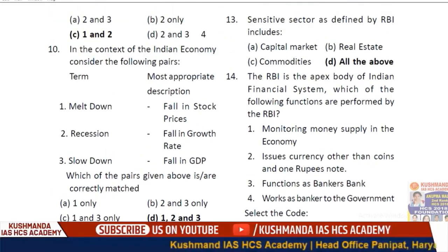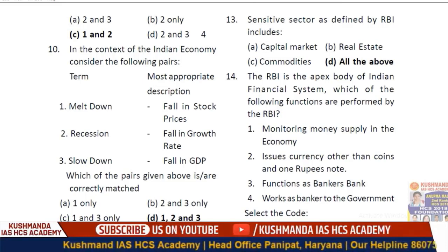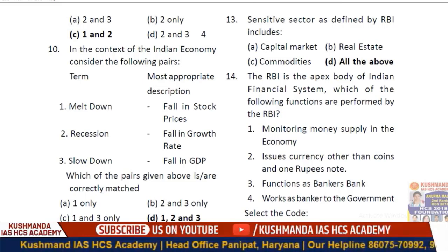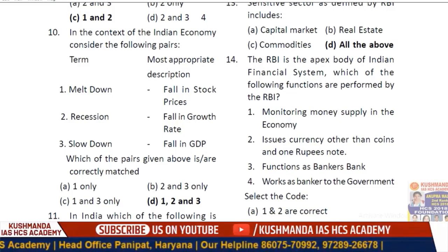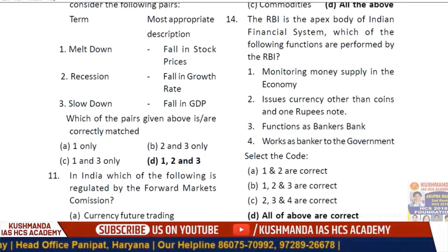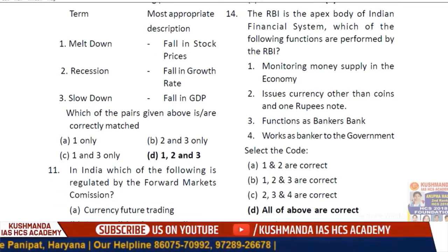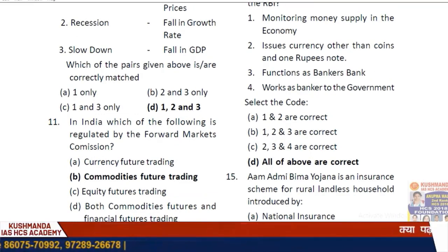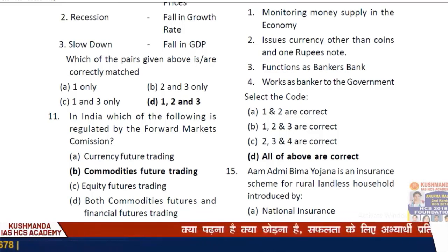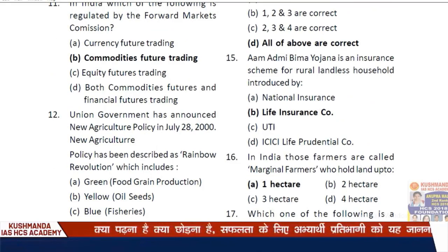Question 13: Sensitive sectors as identified by RBI — the answer is D, all of the above. Question 14: The RBI is the apex body of the Indian financial system. It monitors money supply, issues currency other than coins and one-rupee notes, functions as bankers' bank, and works as banker to the government. The answer is D — all of the above are correct.